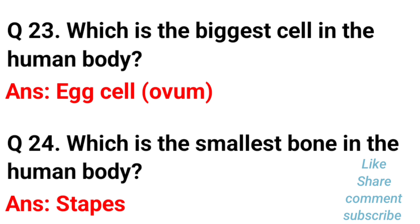Which is the biggest cell in the human body? The biggest cell is the egg cell, that means the ovum. Which is the smallest bone in the human body? The smallest bone is the stapes, which is located in the ear.